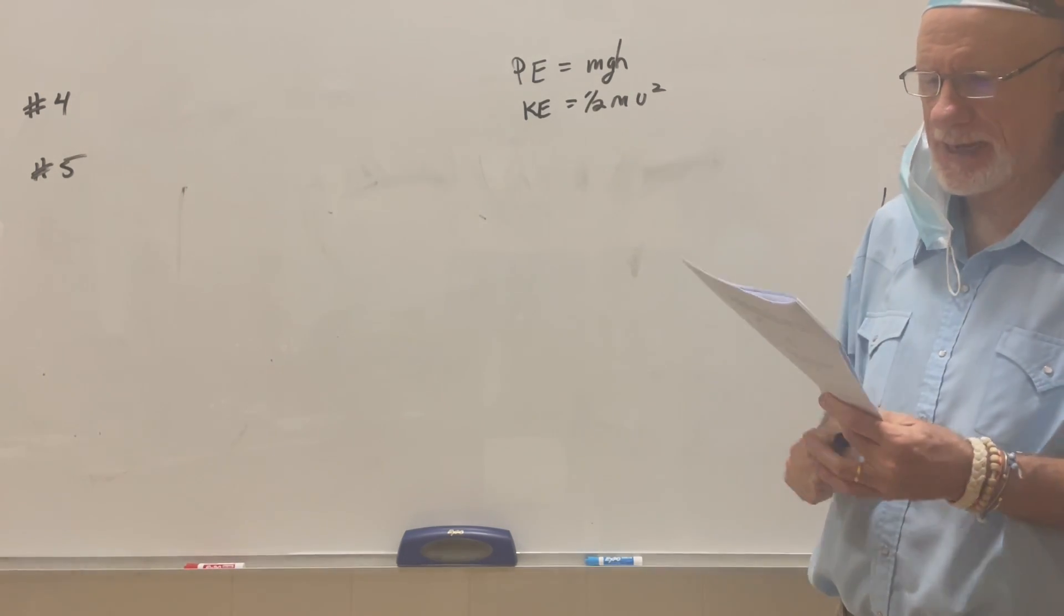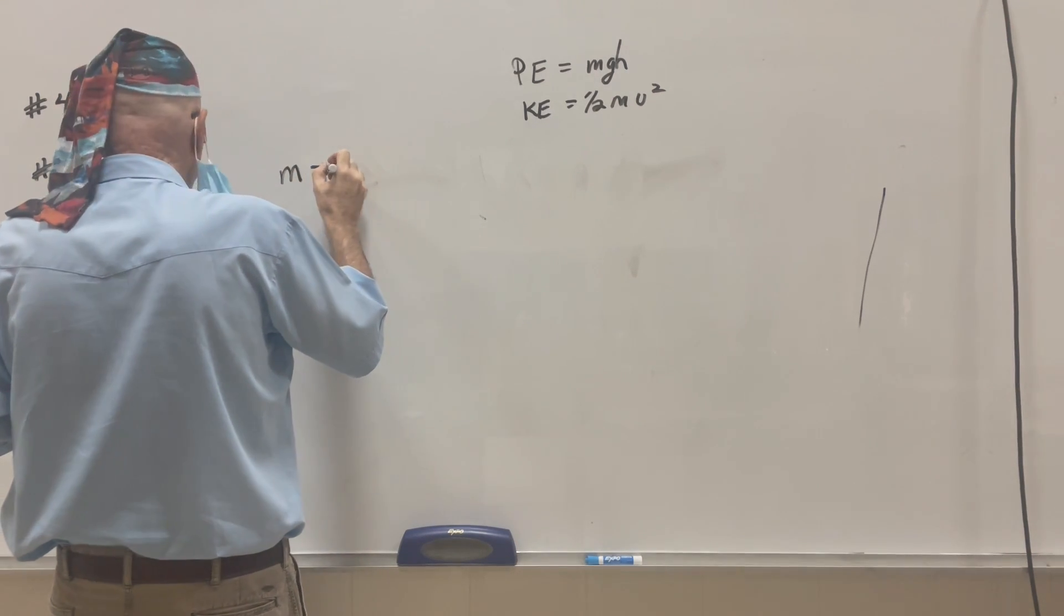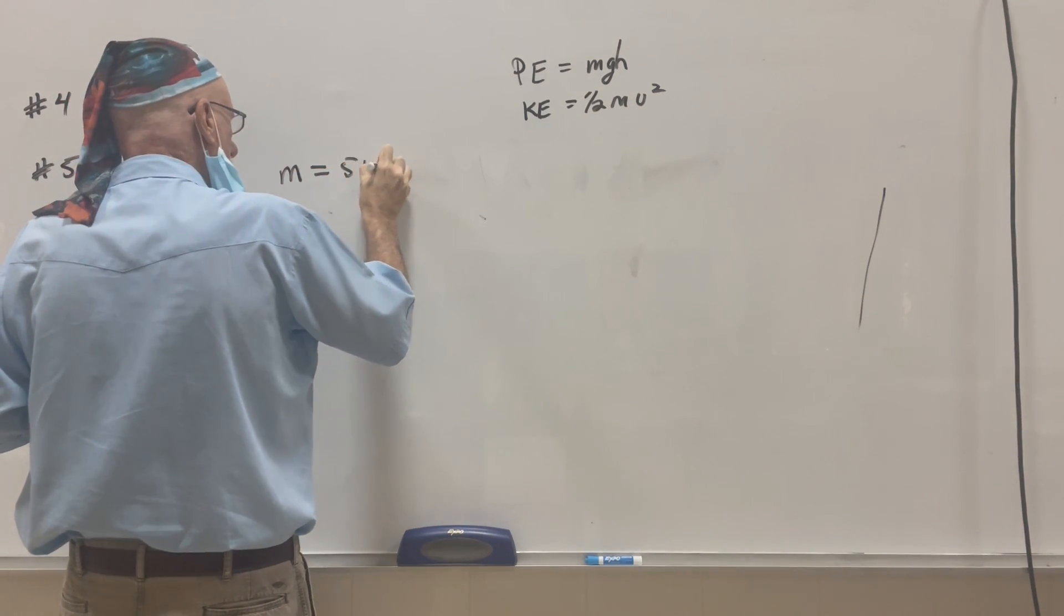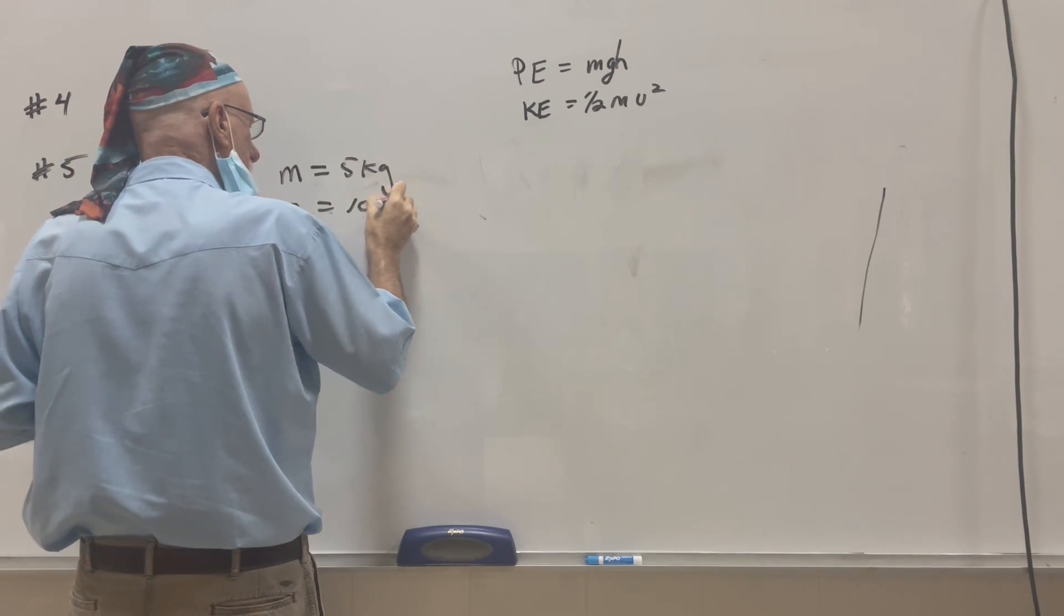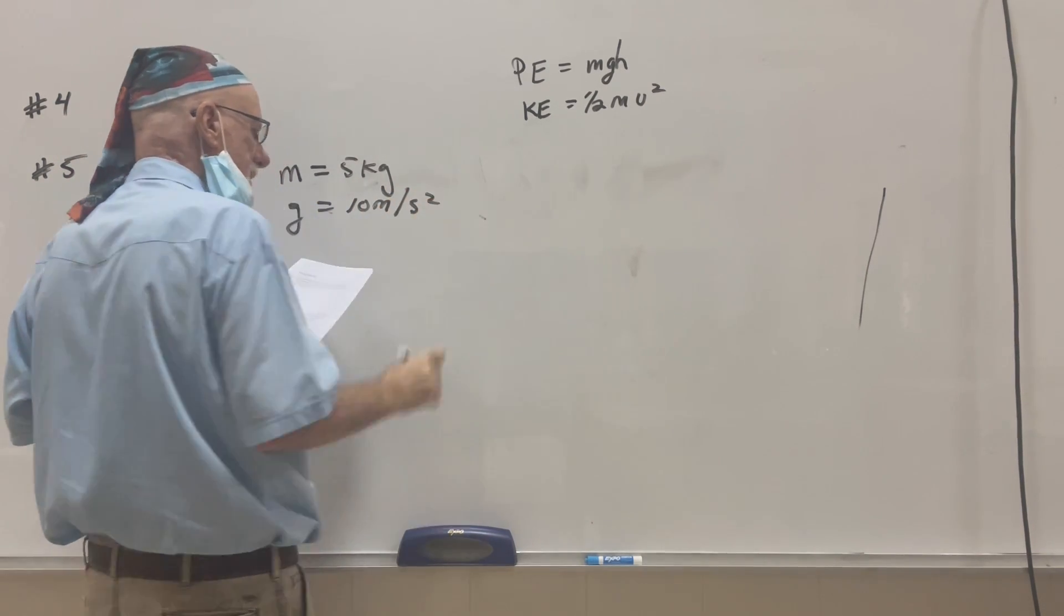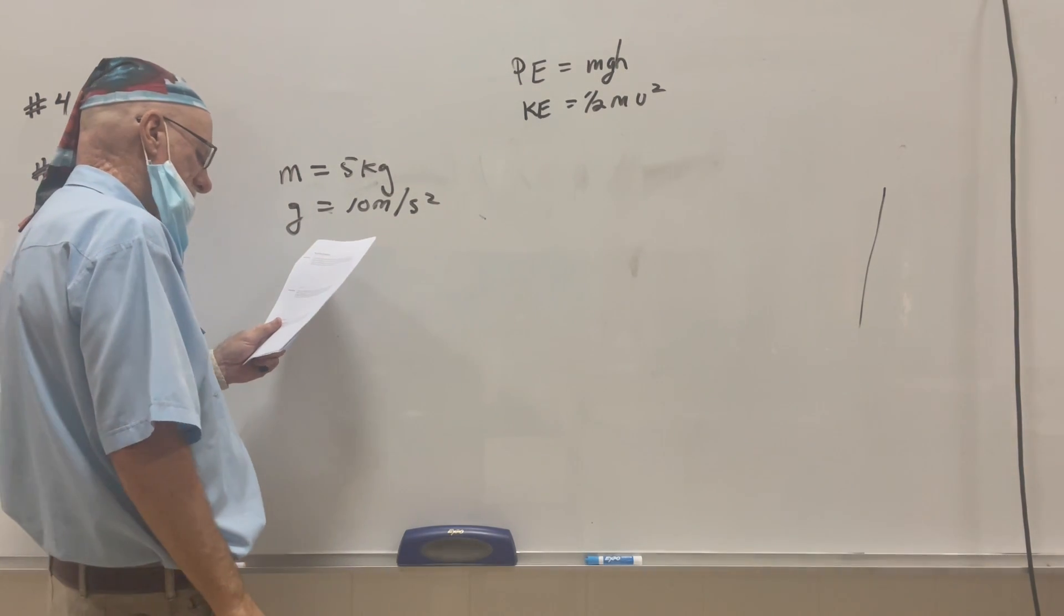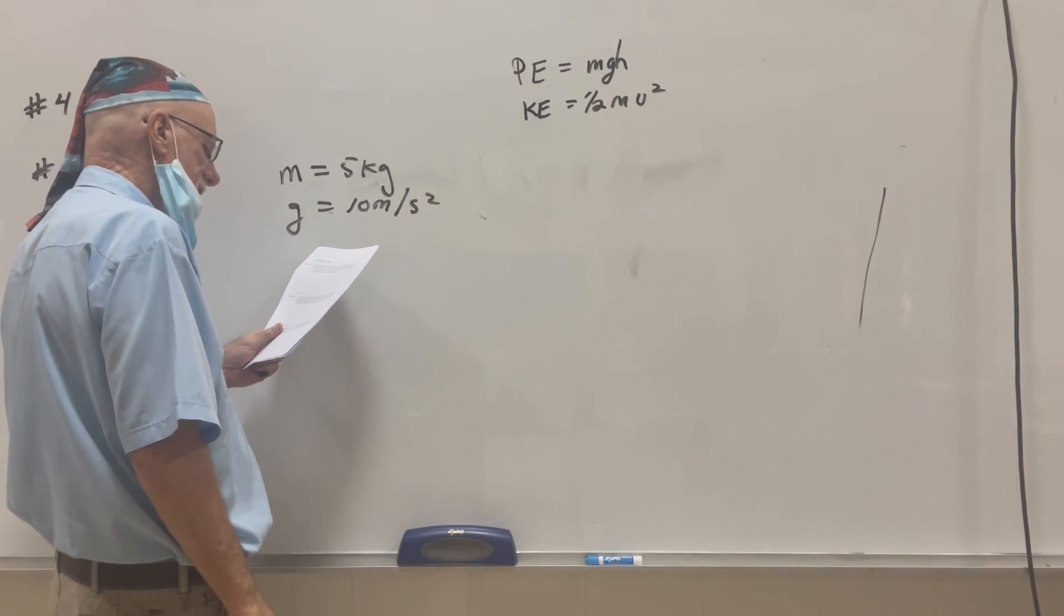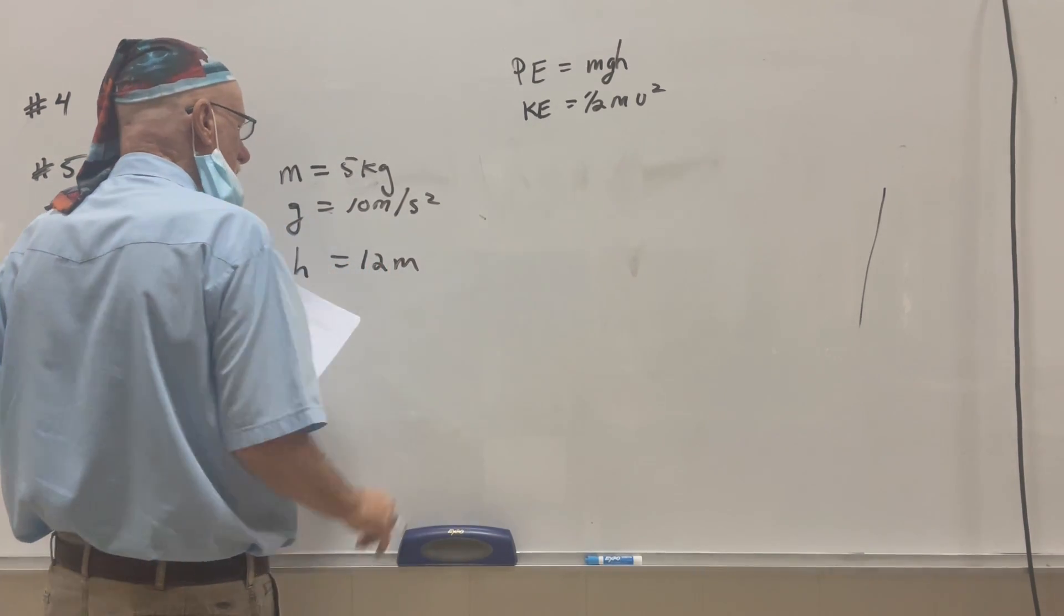So let's write down the data. The mass of the cannonball is 5 kilograms. We're going to say that g, just for purposes to make an easy calculation, we're going to call it 10. And we're going to say that the height is 12 meters. Okay?